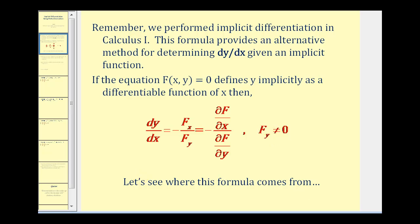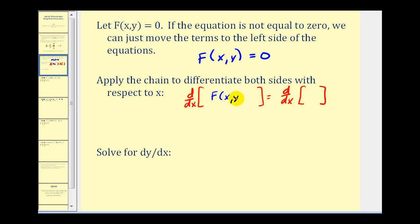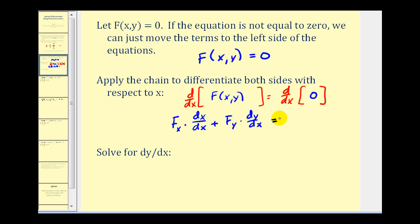Let's take a moment and see where this formula comes from. We start with f(x, y) = 0. If our equation is not equal to zero, we can move terms around so that it is. Then we differentiate both sides with respect to x. When we do this, we apply the chain rule to the left side: first find the partial with respect to x, multiply by dx/dx, plus the partial derivative with respect to y times dy/dx. The right side equals zero.